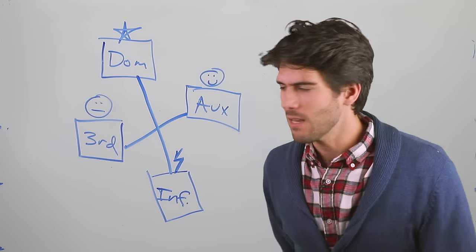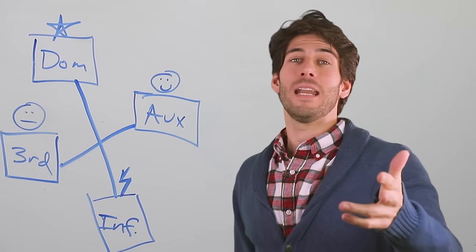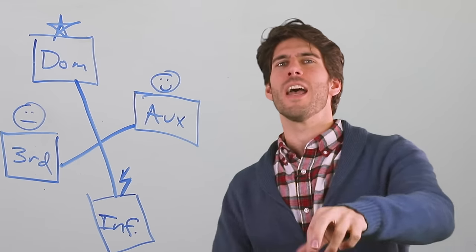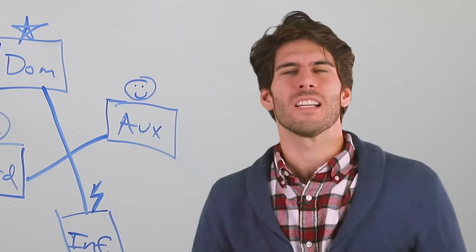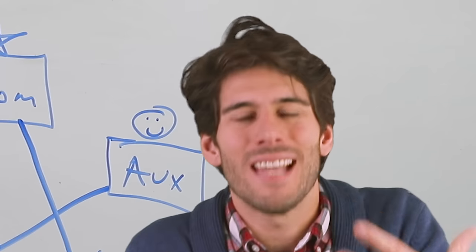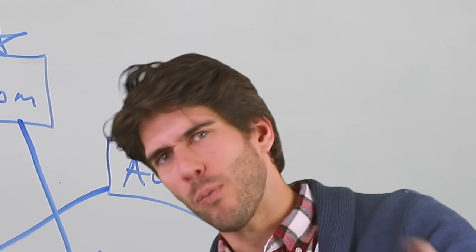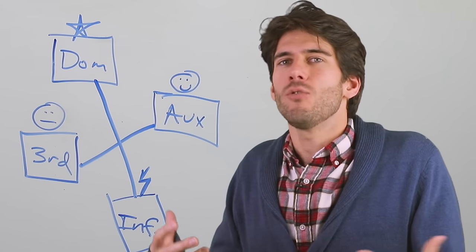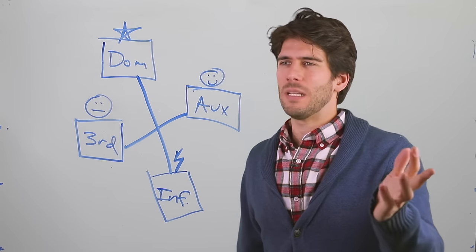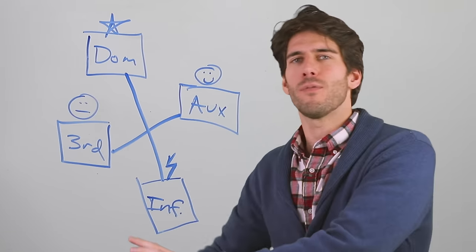For example, INTPs have introverted thinking as their dominant function, so extroverted feeling is the inferior function — the thing being suppressed the most. For INFPs, introverted feeling is dominant, so extroverted thinking is the most suppressed inferior function, causing the biggest imbalance and the most problems. It's not the function in and of itself that causes problems — it's the fact that it's out of balance, being ignored and suppressed. Just because a function isn't preferred doesn't mean you can't use it, but you suppress it and use your preferred functions whenever you can get away with it.